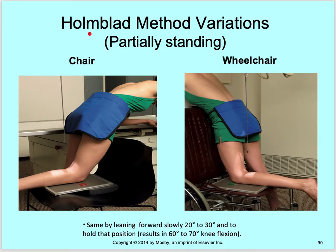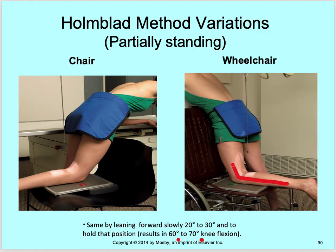Holmblad method variations include using a chair or wheelchair partially standing. Instead of being on the table with both knees, you're on a chair or wheelchair with just one knee. The patient then slowly leans forward about 20 to 30 degrees and holds that position, which results in that 60 to 70 degree knee flexion.